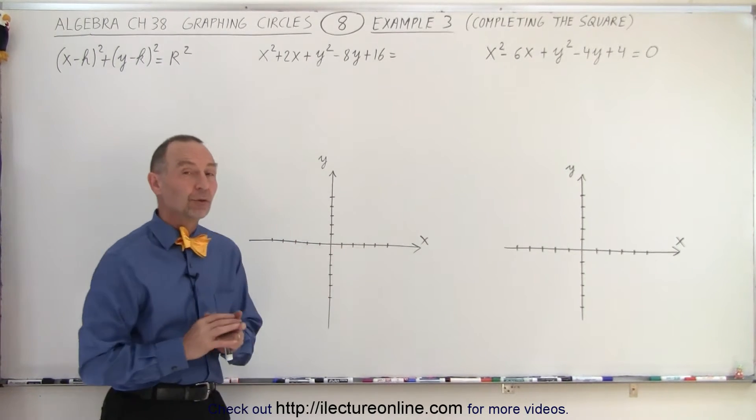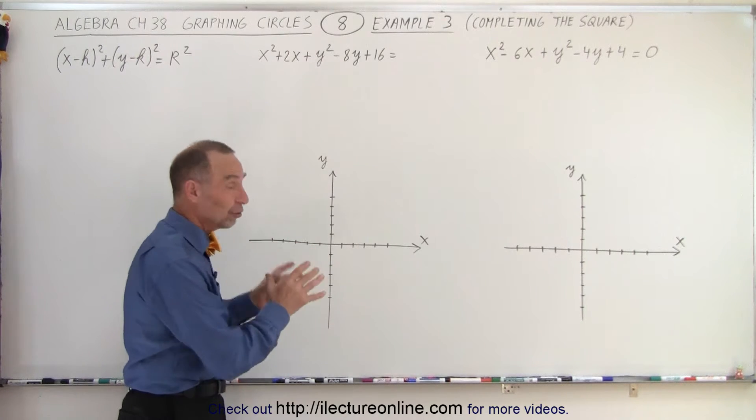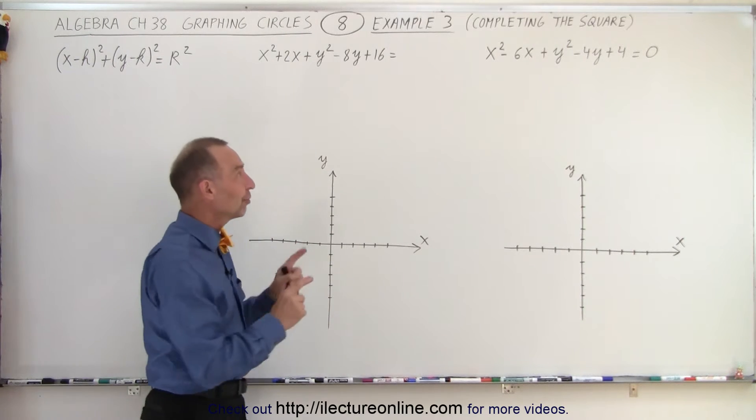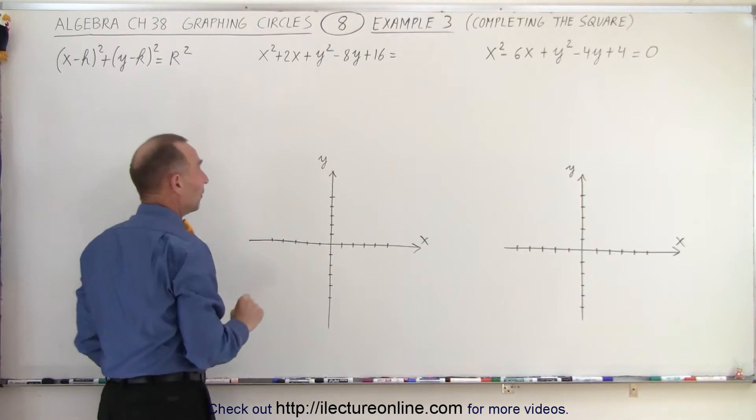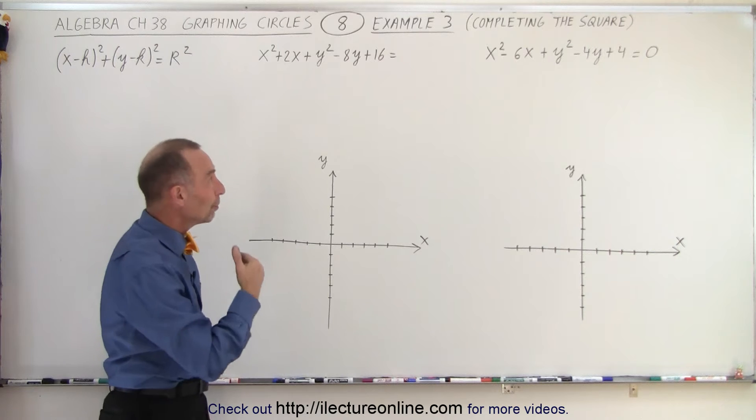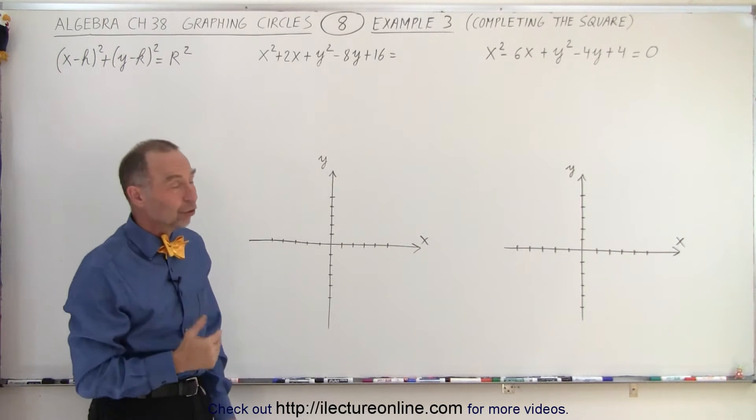In order to be able to graph these two equations, and they are indeed equations of circles, we need to first transform that form into this general form. In order to do so, we'll have to use a technique called completion of the square, or completing the square.